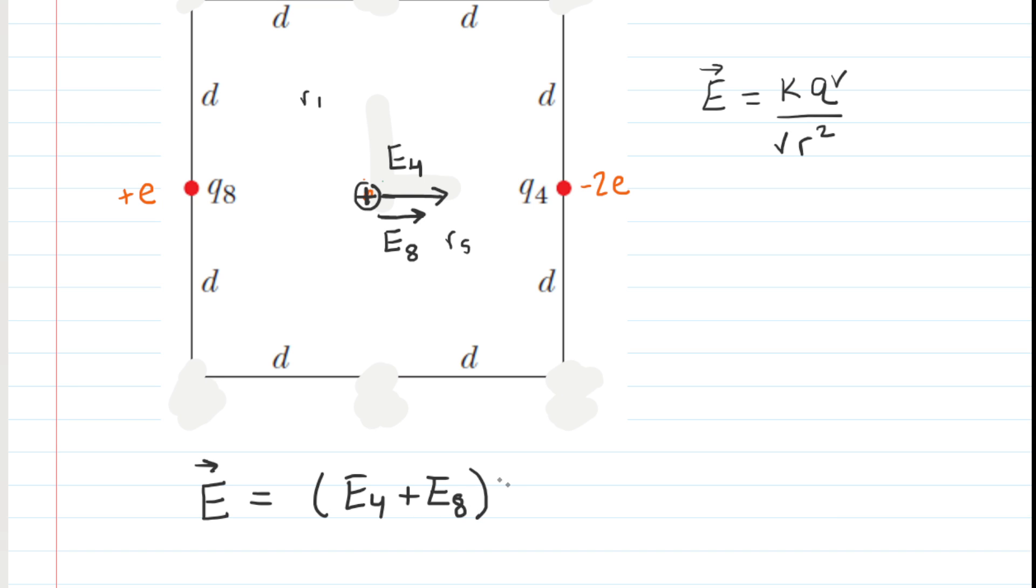And that is the X direction, which in unit vector form is symbolized by I hat. There is no component of the electric field pointing in the Y direction or the Z direction. So we can disregard J hat and K hat in this computation.